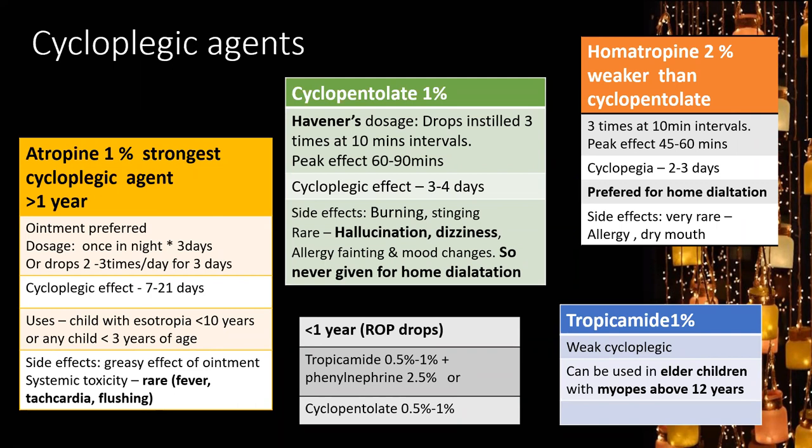Tropicamide is a very weak cycloplegic agent — used for older children, myopes above 12 years, or follow-up visits. For children less than one year, use the same drops as ROP screening: tropicamide 0.5–1%, phenylephrine 2.5%, and cyclopentolate 0.5–1%.